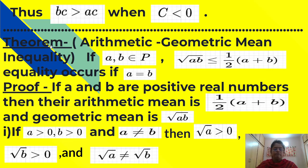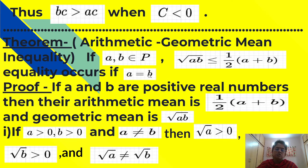Now see the next theorem, which is also called the arithmetic-geometric mean inequality. Statement: if a, b belong to P, then root ab is less than or equal to one half into (a plus b), and equality occurs if a equals b. If a and b are positive real numbers, then their arithmetic mean is one half into (a plus b), and geometric mean is under root ab.